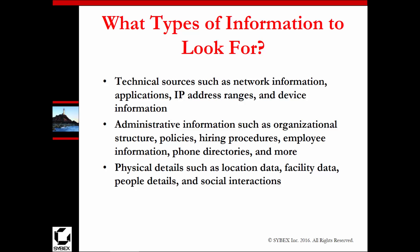So what type of information are we looking for? If we're looking at the network scheme, we're looking for things like IP addresses, ranges, device information, other technical sources, network diagrams. If we're looking for administrative information, we could be looking at organizational structure, policies, procedures, hiring practices, employee information, phone directories, who's in charge of who, and a general organizational flowchart.